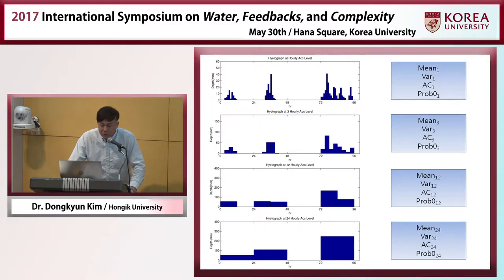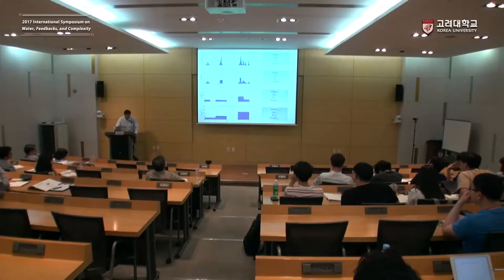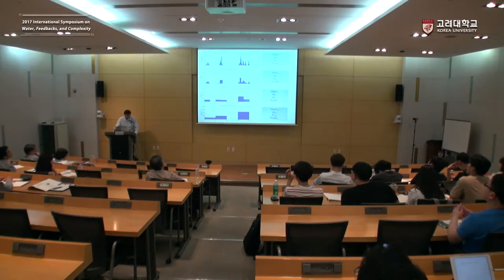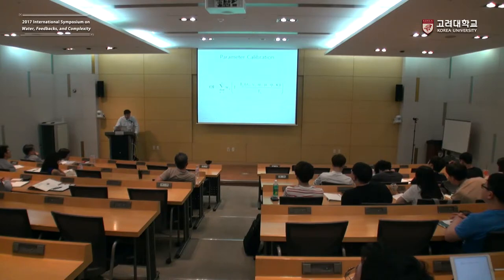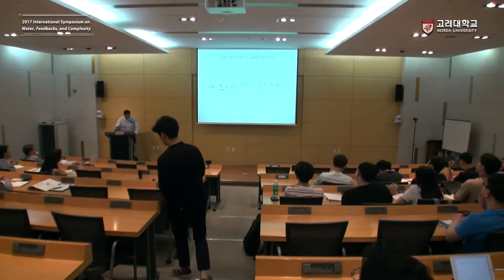To obtain more equations, we consider different aggregation levels of the time series. For example, we observe the same rainfall occurrence but compute statistics at one-hour, three-hour, 12-hour, and 24-hour time steps. For each of these rainfall time series, we calculate different rainfall statistics, giving us 16 equations but only six unknowns. In this case, we cannot find a solution that perfectly satisfies all 16 equations because we have more equations than unknowns. So in such a case, we minimize an objective function.